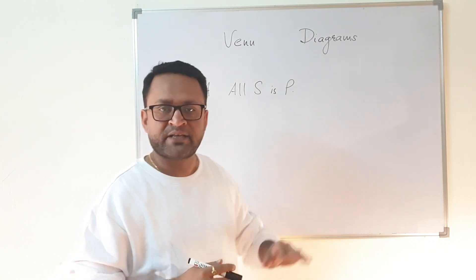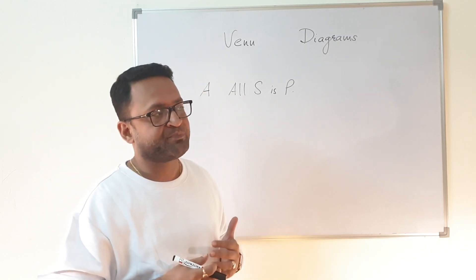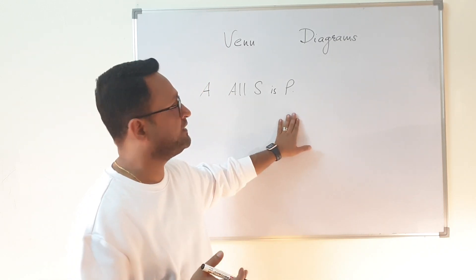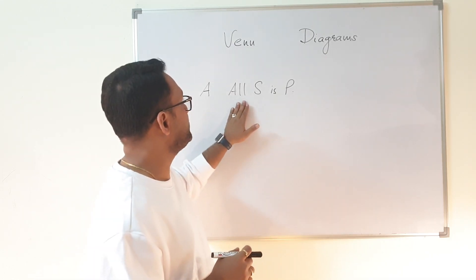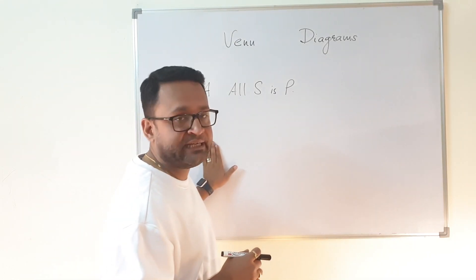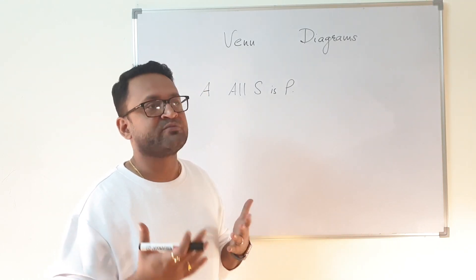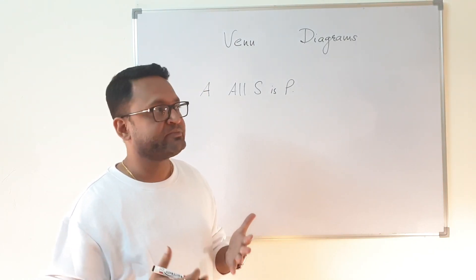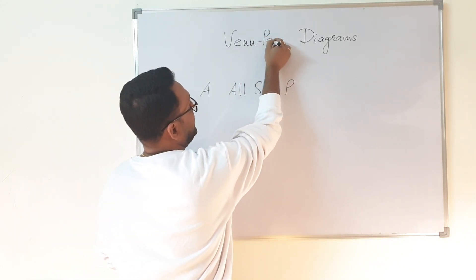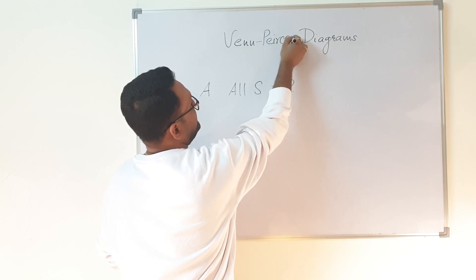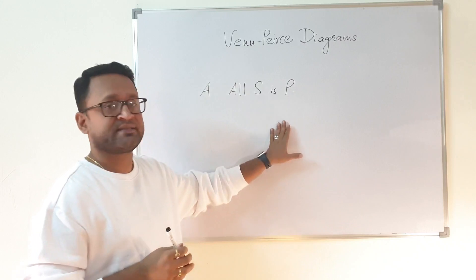In the last lecture what we drew were basically Euler diagrams. What we are drawing right now are Venn diagrams — however, for I and O propositions, they are not exactly Venn diagrams but rather Venn-Peirce diagrams, which we will also be discussing.